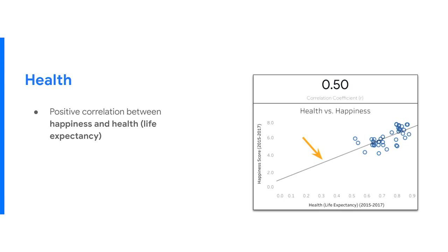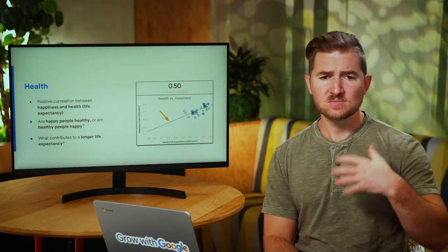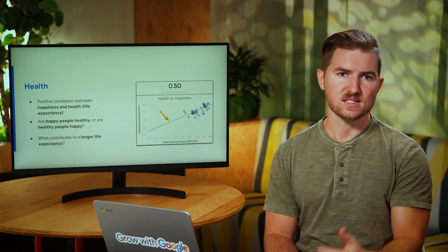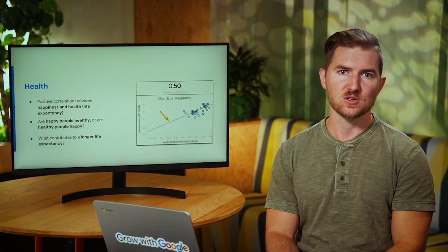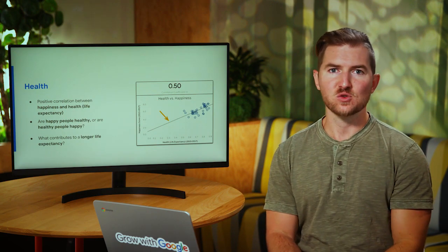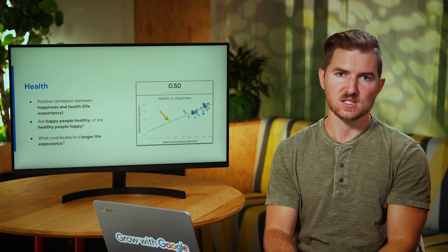It's important again that we discuss the transition to the next slide. We did find a positive correlation between happiness and health, but the question remains: are happy people healthy, or are healthy people happy? We know that they are related, but we don't know what causes the other. And finally, what contributes to a longer life expectancy? If we know that longer life expectancy is related to happiness, what is it that helps create longer life expectancy within a country? These are the two questions we need to answer before the end of the presentation, so we are creating a logical flow as we move through.